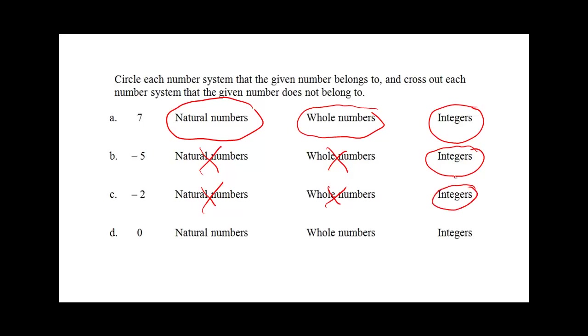0 is not a natural number. Natural numbers begin with the number 1 and count 1, 2, 3, etc. So we will cross off natural numbers for the number 0. But whole numbers start with the number 0 and count 0, 1, 2, 3, etc. So we will circle whole numbers for 0. And of course, 0 is an integer.